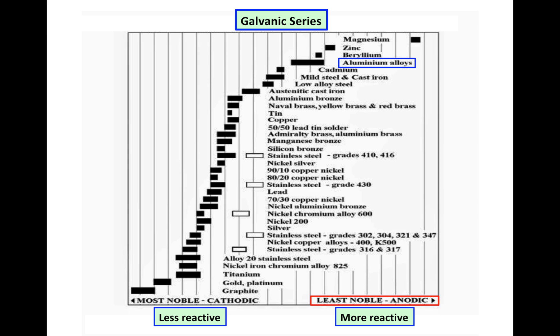On the left, we have less reactive metals. They're the most noble, and they are cathodic, and graphite is an example of those. But of course, graphite is not really a metal, but it's acting like one in these reactions.